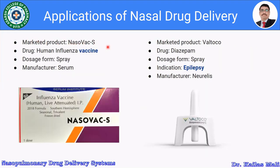Nasovac contains the human influenza vaccine and is available in the market as a spray form. It is manufactured by Neuralis. The product Valtoco contains diazepam as a nasal spray and is used for the management of epilepsy.